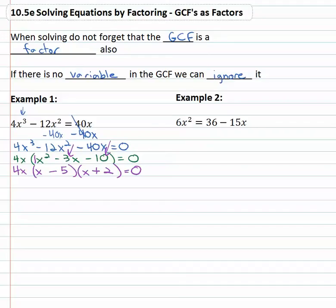So first we make it equal to zero, then we factor and now we set each factor equal to zero. The GCF is a factor, x - 5 is a factor and x + 2 is a factor.